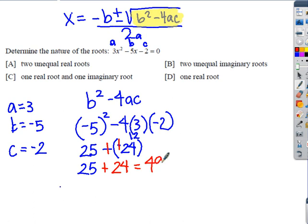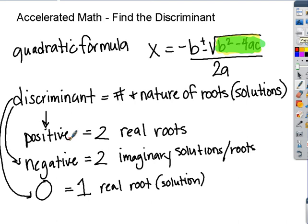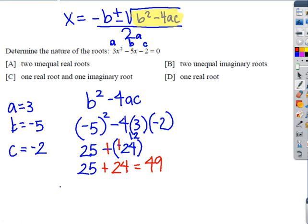So what does that tell us? 49 is our discriminant value. This discriminant is telling us about the nature and number of the roots. If we have a positive number, what will our solutions be? Two real roots. So with our positive 49, we have two unequal real roots, because this was positive.